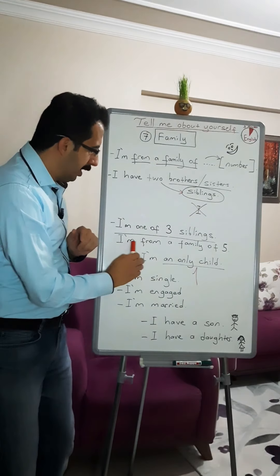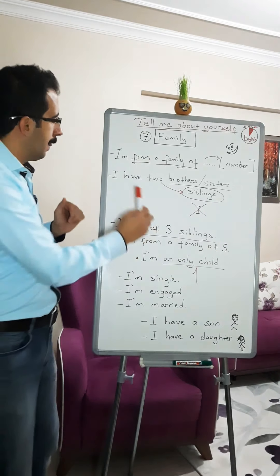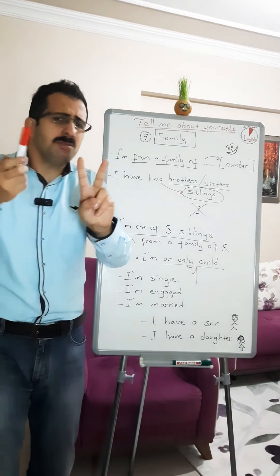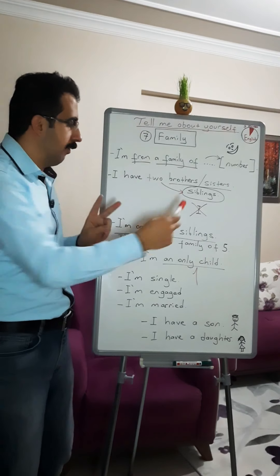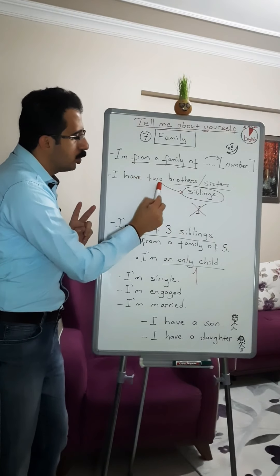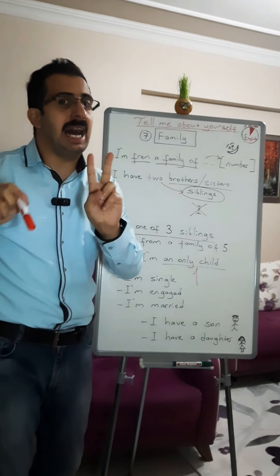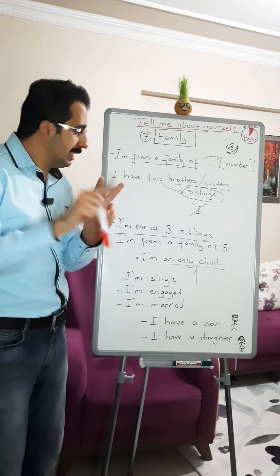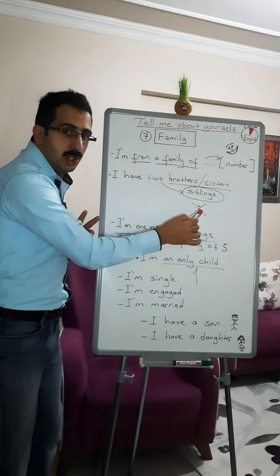'I am from a family of five.' You can add, 'I have two brothers or sisters.' Also, instead of brothers or sisters, you can use the word 'siblings' — 'I have two siblings.' Note that siblings does not include you.